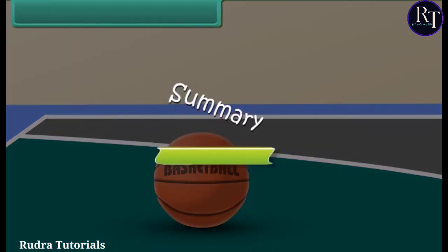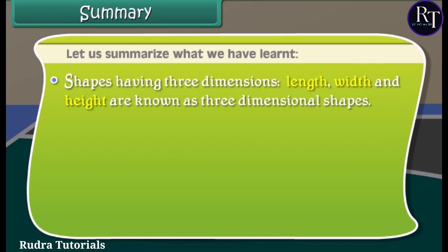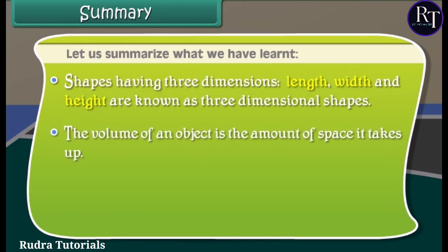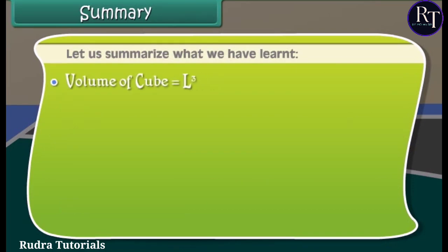Summary. Let us summarize what we have learned. Shapes having three dimensions: length, width and height, are known as three-dimensional shapes. The volume of an object is the amount of space it takes up. Volume can also show capacity of a container, how much it can hold. Volume of cube is equal to L cube.